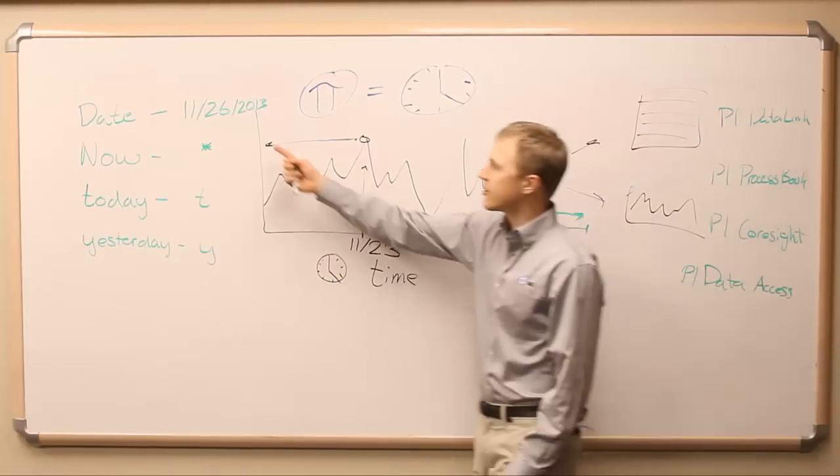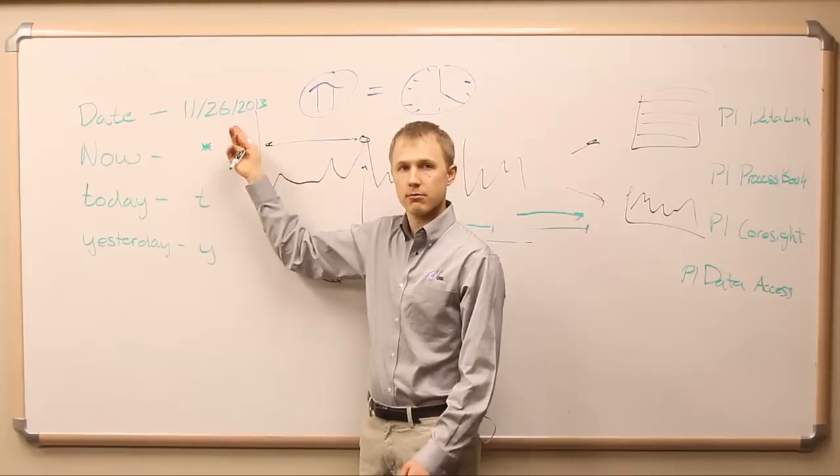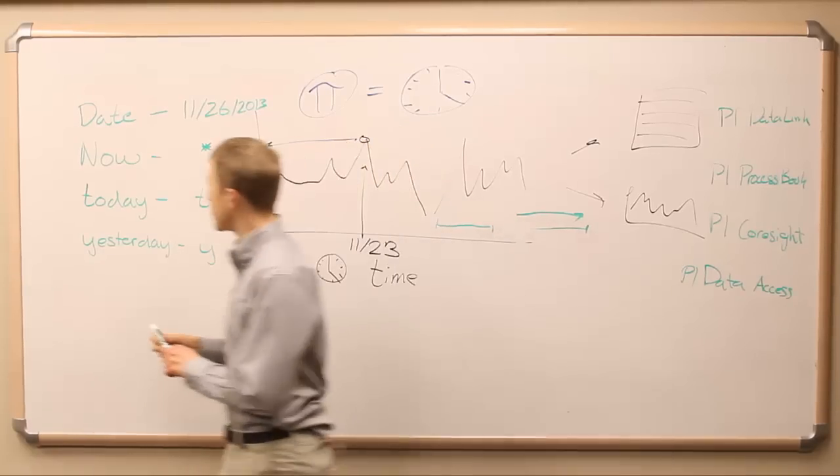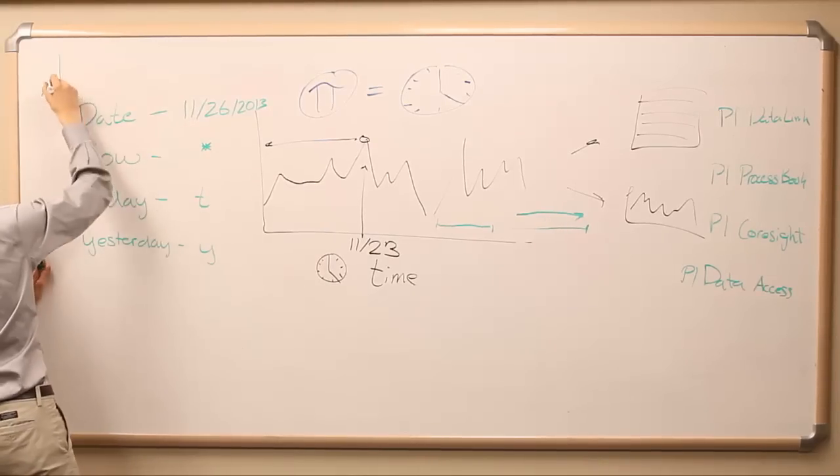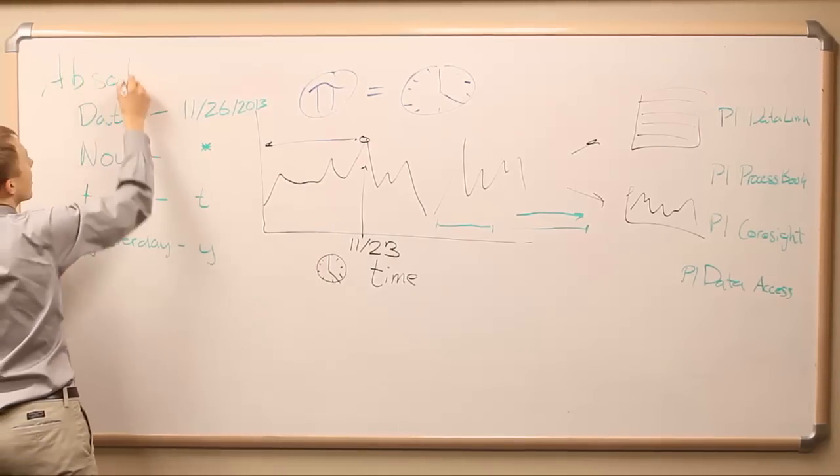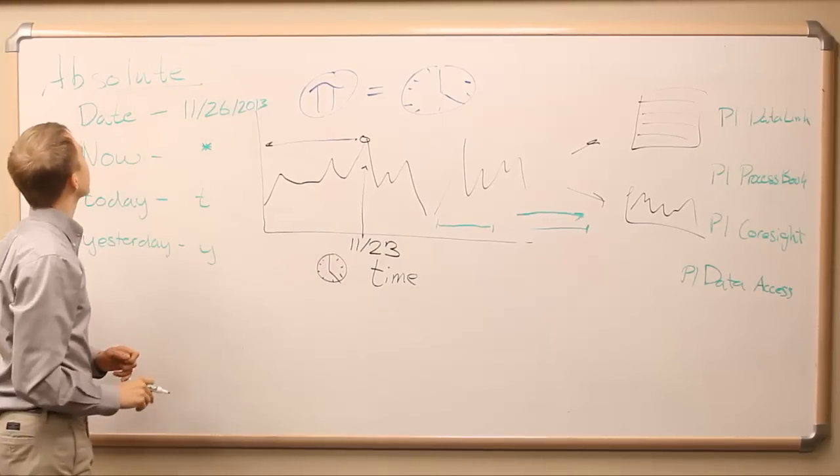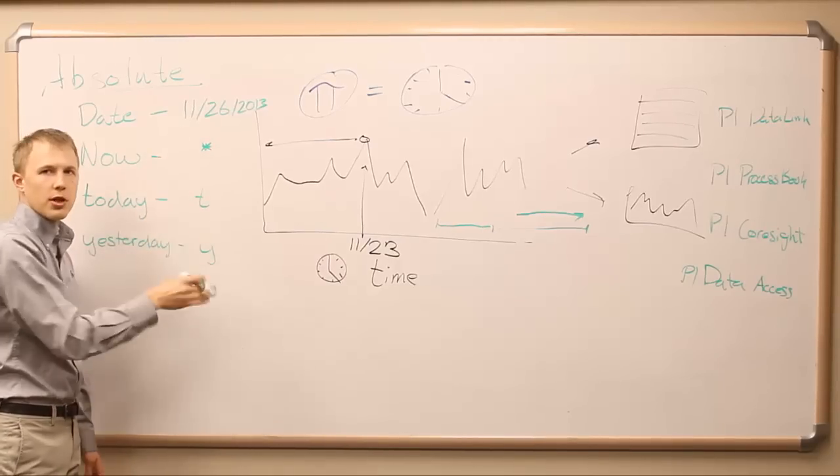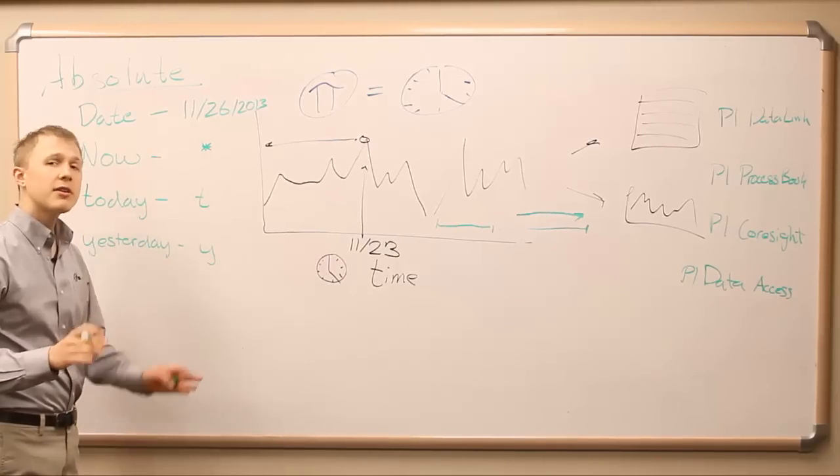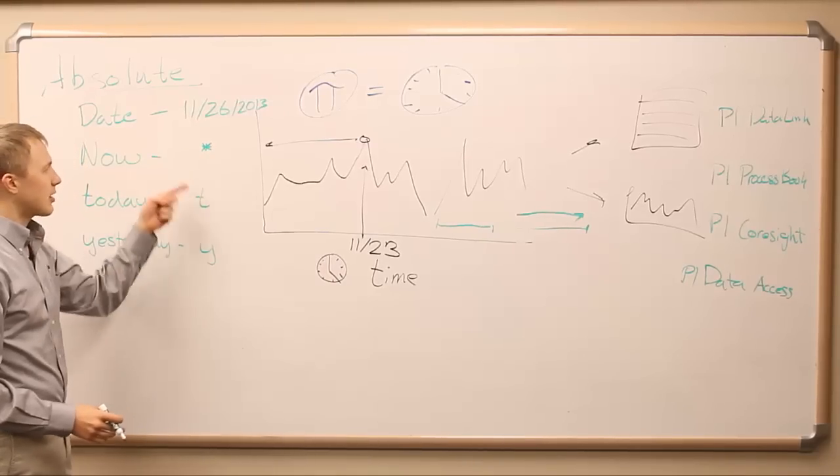Whereas, just the static date, while very useful, will always be just that date. Now, we refer to these with a particular type of name. We refer to these as absolute references. Meaning, if I were to give you one of these references, you would know what time I was talking about. Even if that time is changing as time moves, you know exactly where I'm talking about.